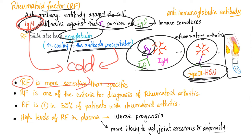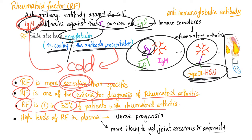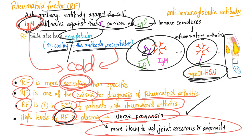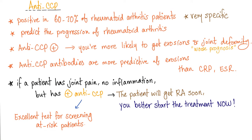Rheumatoid factor is more sensitive than specific and is one of the criteria for diagnosis of rheumatoid arthritis — positive in 80% of RA patients, which is why it's sensitive. High levels of rheumatoid factor mean worse prognosis and more likelihood of joint erosions and deformity. In other words, rheumatoid factor has prognostic value and does correlate with symptoms.